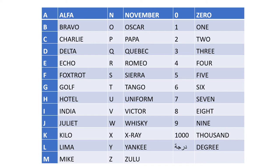A - Alpha, B - Bravo, C - Charlie, D - Delta, E - Echo, F - Foxtrot, G - Golf, H - Hotel, I - India, J - Juliet, K - Kilo, L - Lima, M - Mike.